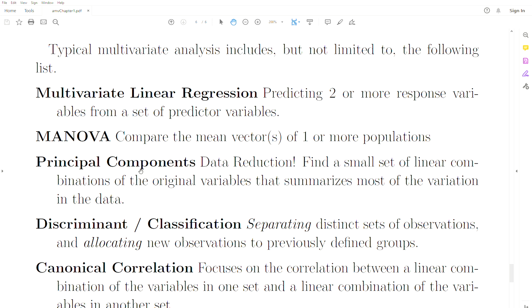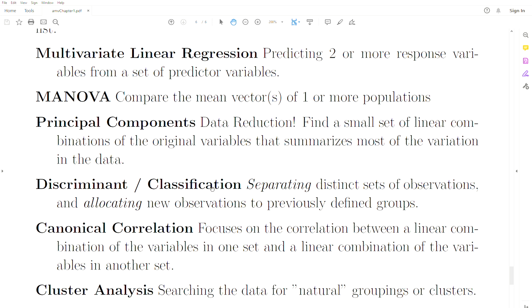Principal components is a data reduction technique. Discriminant analysis and classification - that's separating variables into groups. Classification is where do we put the next observation, which group should they go into based on the information.